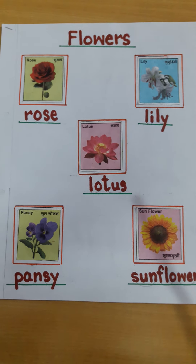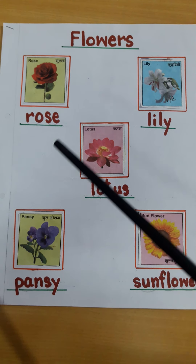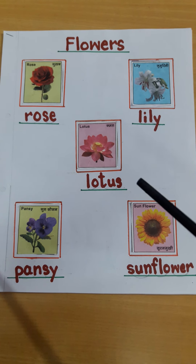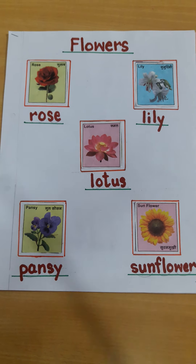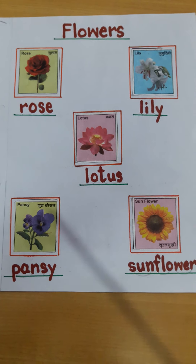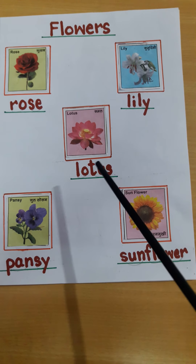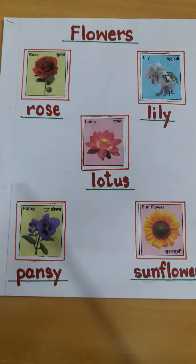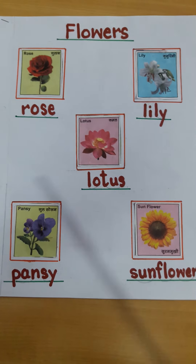Aapne bagicha bana hua dekha hai, usko hum log garden kahte hai. Usko hum log kya kahte hai? Garden. Park me jate hai, park me bhi garden hota hai. To then tell me, what do you see in a garden?